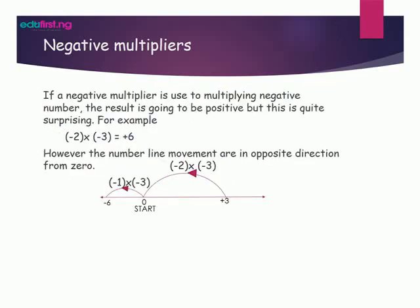If a negative multiplier is used to multiply a negative number, the result is going to be positive — but this is quite surprising. For example, minus 2 times minus 3 equals plus 6. The number line movements are in opposite directions.